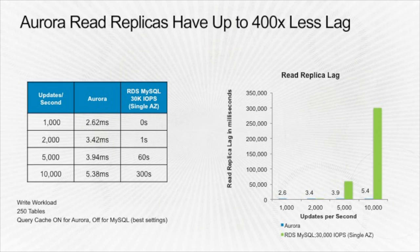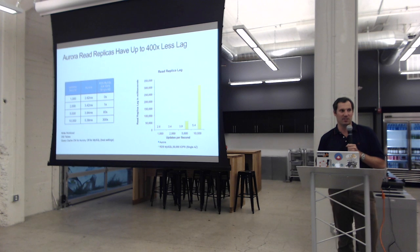Read replica lag on Aurora is significantly less than traditional MySQL. With MySQL, as you scale up transactions on the primary, lag starts to go way up. With Aurora doing 10,000 updates per second, we're in the sub-10 millisecond range — the blue bars don't even show. Running an RDS MySQL with a 30,000 IOPS single-AZ setup, you'd get around 300 seconds of lag — that's five minutes — which is probably not ideal unless your read replica clients understand they'll see eventual consistency.